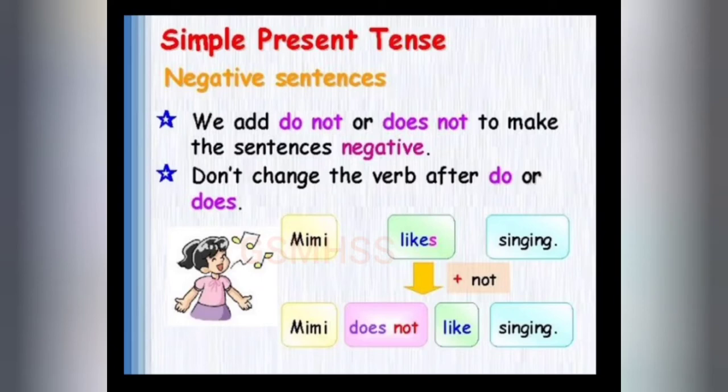Let us see some examples. 'Meena likes singing' — this is a positive sentence. Now we are going to change this sentence into a negative sentence by using 'does not'. See this example: 'Meena does not like singing.' Here we use the word 'does not'.